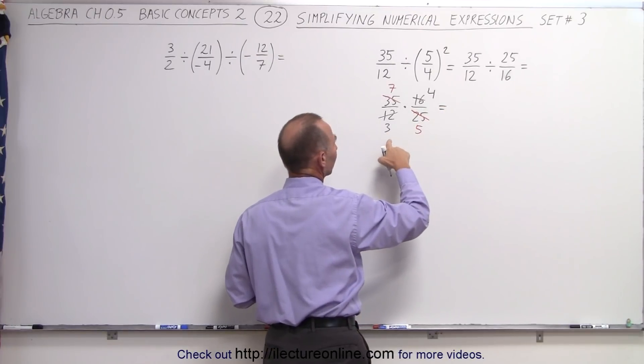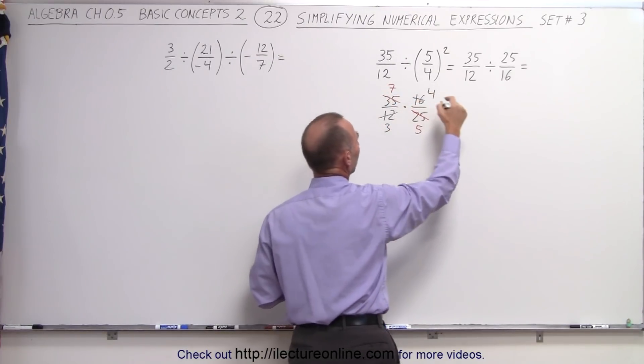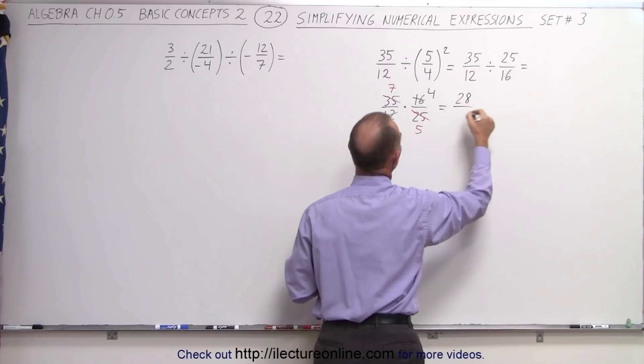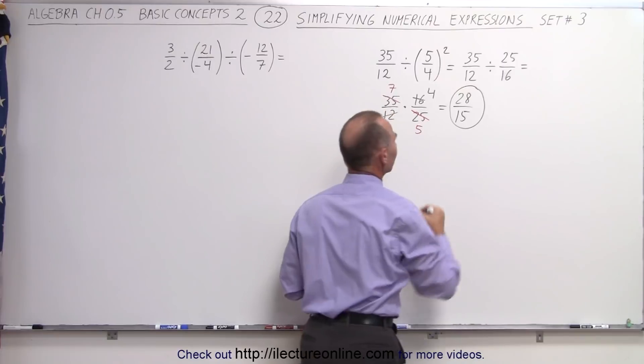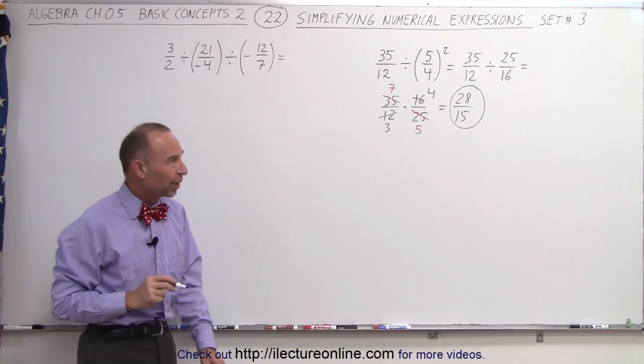And now we can go ahead and complete this. 7 times 4 gives us 28 in the numerator, and 3 times 5 gives us 15 in the denominator. And that's the final simplified form of that expression.